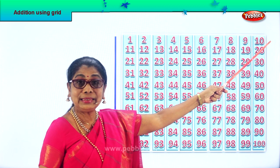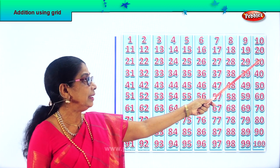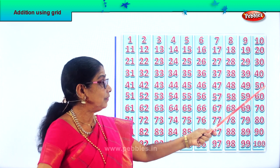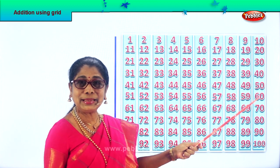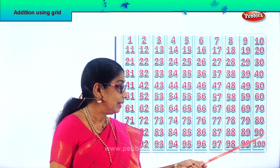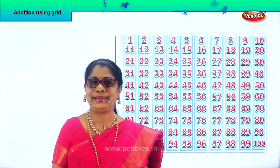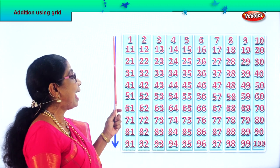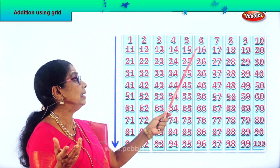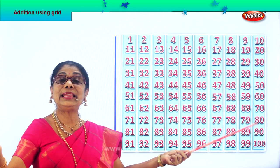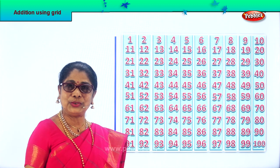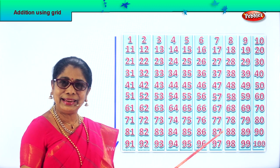Look at the last column: 10. 10 plus 10? 20. 20 plus 10? 30. 30 plus 10? 40. 40 plus 10? 50. 50 plus 10? 60. 60 plus 10? 70. 70 plus 10? 80. 80 plus 10? 90. 90 plus 10? 100. So this is what is called adding using the grid. When you add 10 to a single-digit number — for example, to 6, 10 plus 6 is 16 — and another 10, and so on. When you have the grid, the number is there and easy to find. Did you learn to add in tens using the grid? Good.